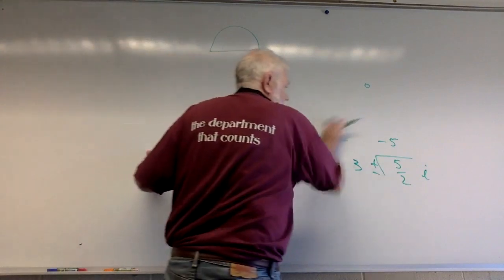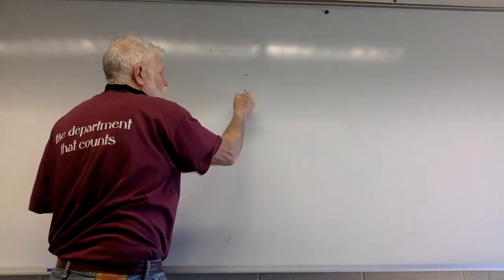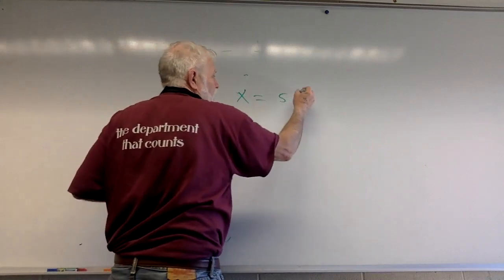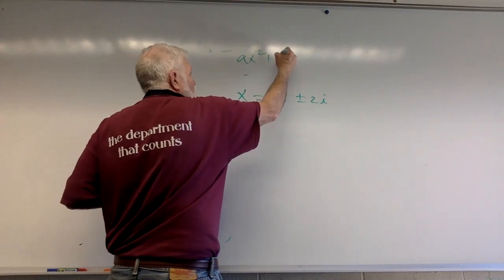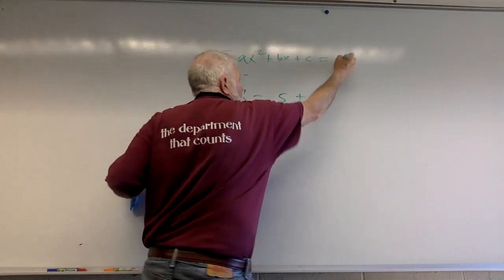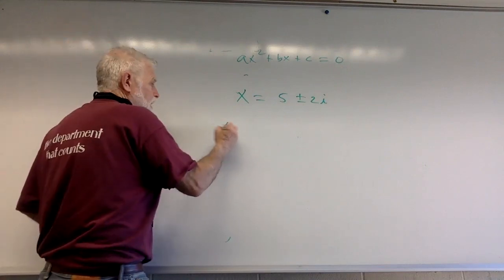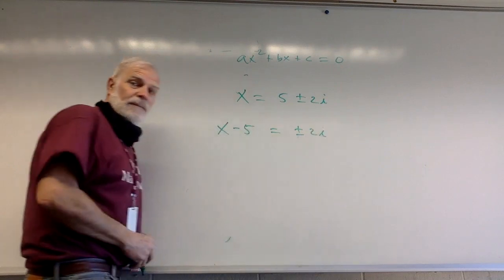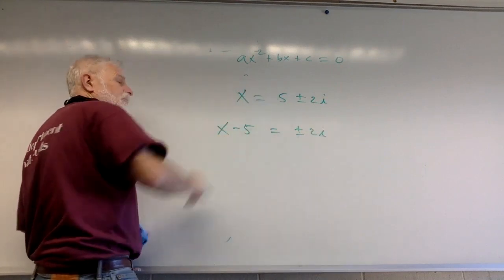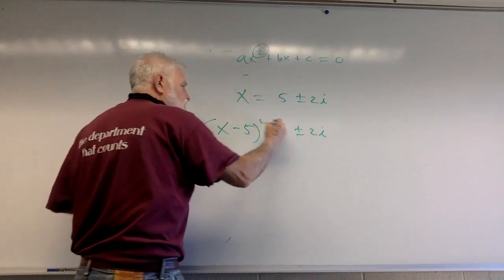Then I gave you the solution to a quadratic. The solution to a quadratic might have been x=5±2i, and I said can you give me ax²+bx+c=0? Can you give me that? I hope you remember what you did: x-5=±2i. Step one, addition became subtraction. I gotta get squaring, so you square both sides.